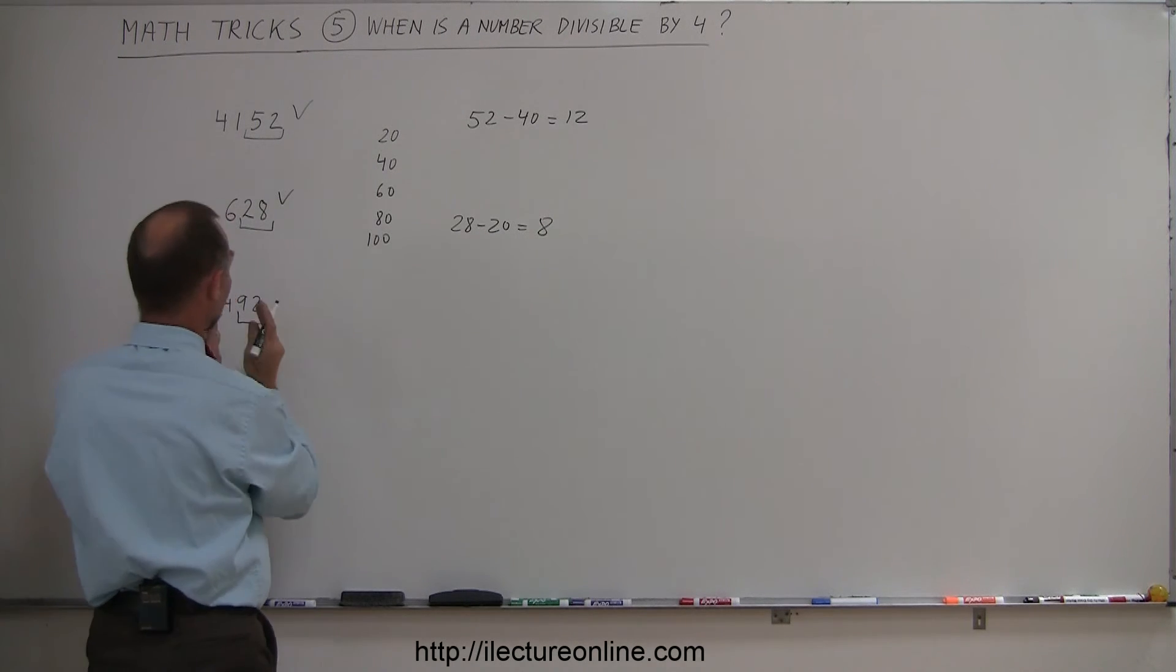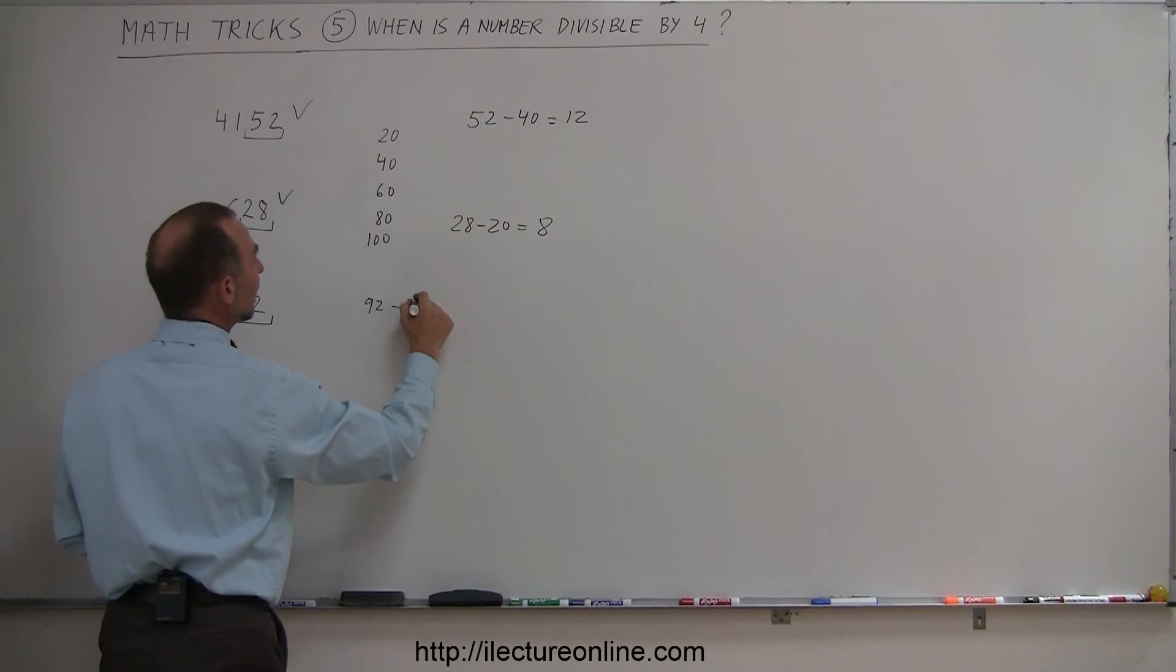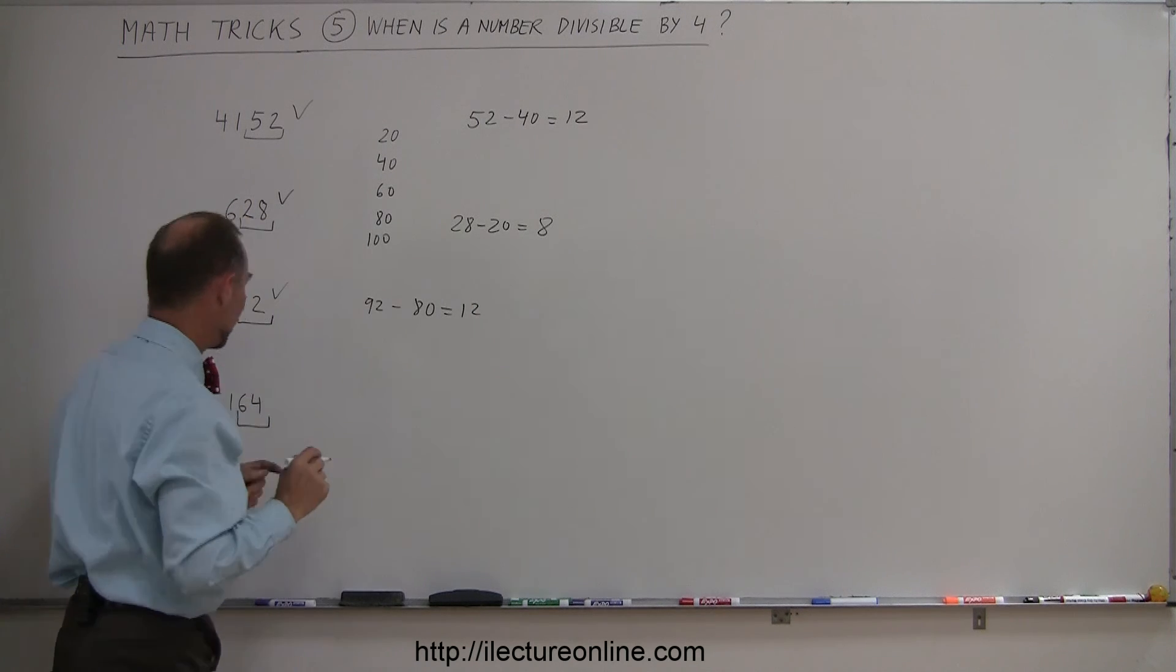How about 92? Well again, the last two digits right here, so you have 92 minus 80, that gives you 12, and of course 12 is divisible by 4, so this whole number is divisible by 4.